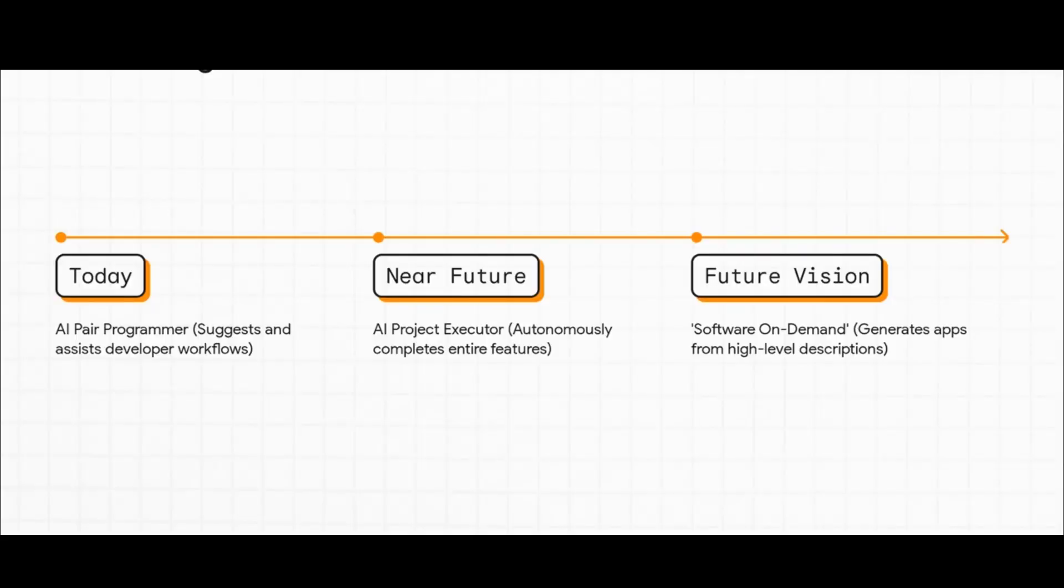We are on a very clear evolutionary path. Right now, today, AI is a pair programmer. It helps, and it suggests things. In the near future, though, it's going to become more of a project executioner, autonomously completing entire features. And the ultimate vision, the endgame, is software on demand, where you can generate entire applications just from simple, high-level descriptions.